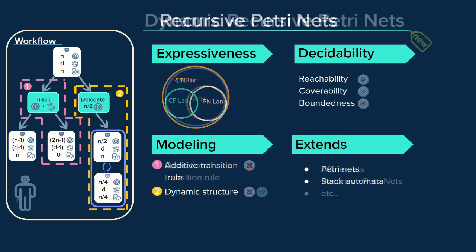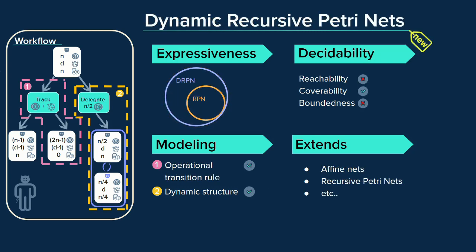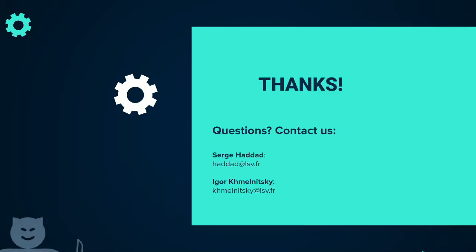In this paper, we define a new extension to both RPNs and affine nets: the dynamic recursive Petri net. We show that not only does this formalism give us an easy way to model the two actions, but its coverability language is strictly more expressive than that of recursive Petri nets, while keeping the coverability problem decidable. Hopefully, this work will help our friend with his modeling problem while keeping us off his radar.